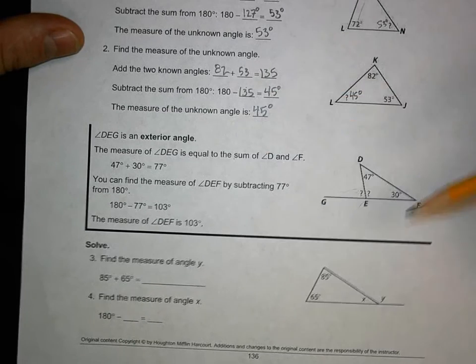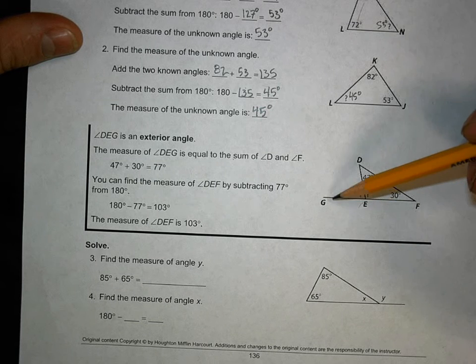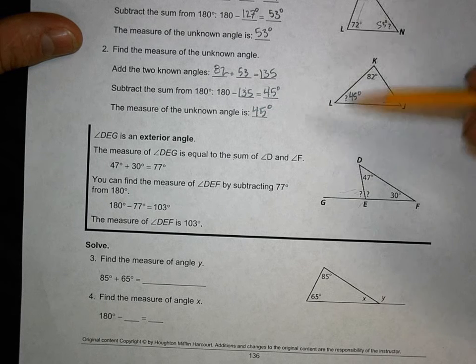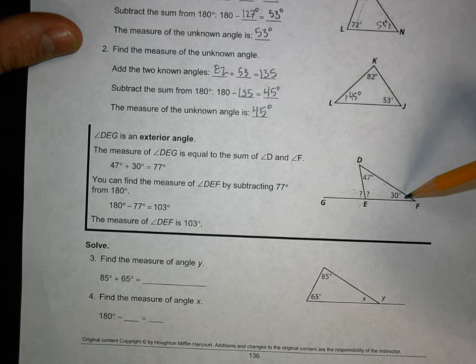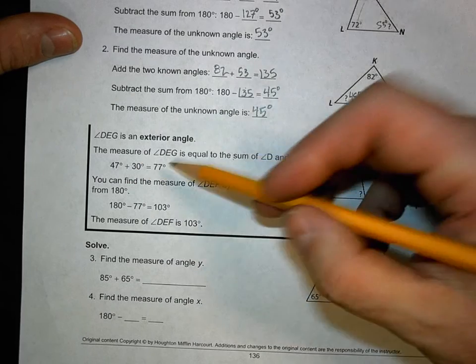So triangle sum theorem can be taken to mean another thing. It can mean that the measure of angle DEG is equal to the sum of angle D, and that should really say measure there, angle D and angle F. So 47 plus 30 equals 77.